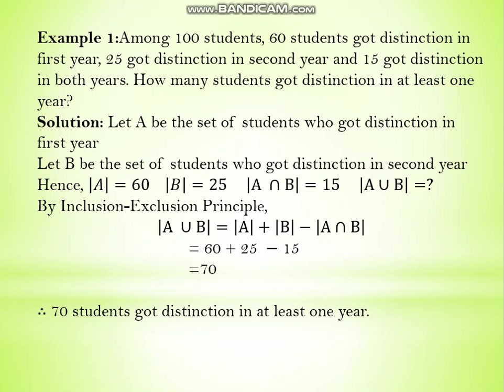Now let us see an example. We have 100 total students; 60 got distinction in the first year, 25 got distinction in the second year, and 15 got distinction in both years. These sets are not necessarily disjoint — the 60, 25, and 15 students may overlap. How many students got distinction in at least one year?